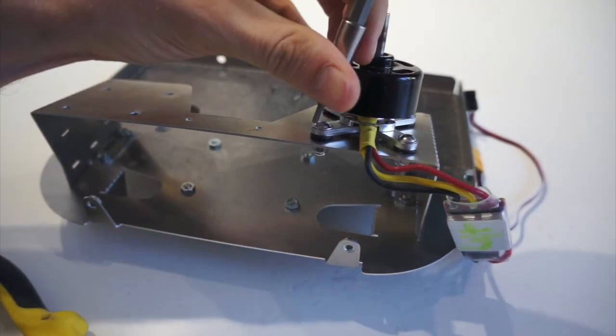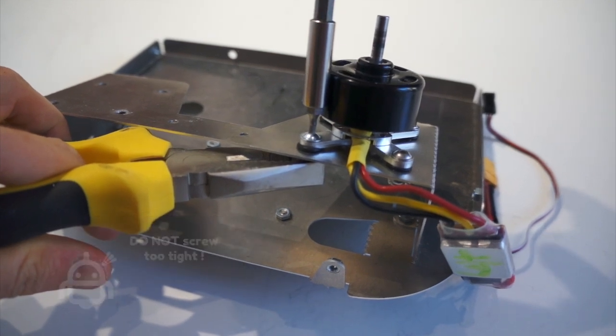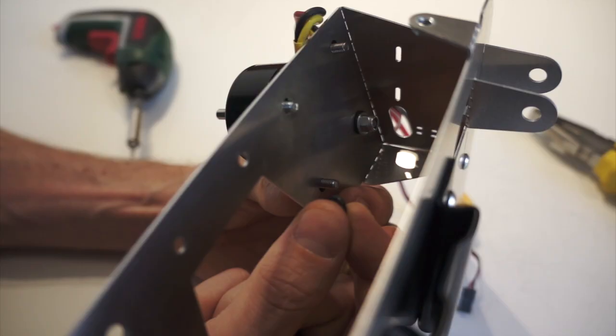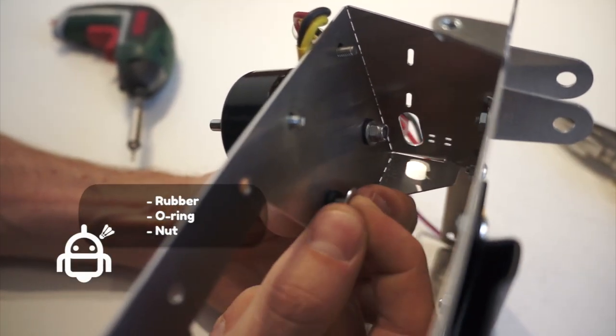It's very important that you do not screw too tight, the washers are here to absorb the motor's pressure. From this perspective, you can see the order: rubber, metal o-ring and nut.